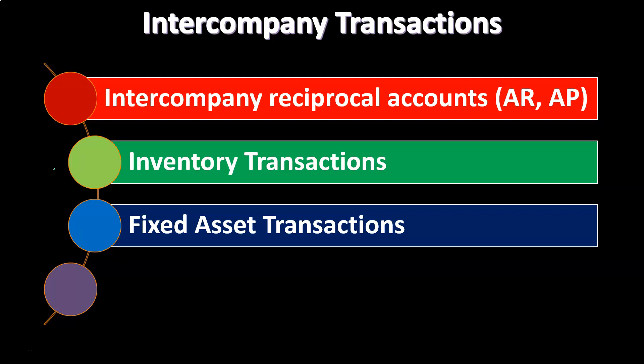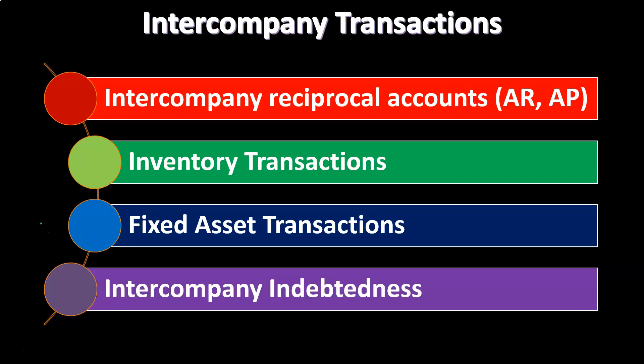Then we have fixed asset transactions. We could have intercompany transactions related to fixed assets, and they're a little bit more complex than other types of transactions — possibly more so than just intercompany reciprocal accounts — because of the other things involved, such as depreciation, gains and losses. Then there's intercompany indebtedness, which could be a little bit more difficult than simply a reciprocal account, because of other things that could be involved, such as the calculation of interest.